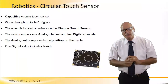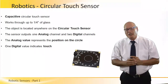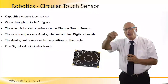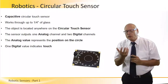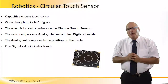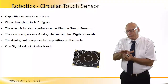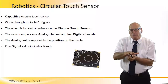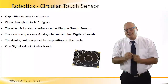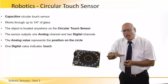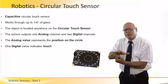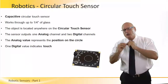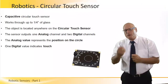A circular touch sensor is a capacitive type of circular sensor and it can work through glass. The object can be located anywhere on the circular touch sensor. For example, if we need to clean or shine something, we want to know at any given moment exactly where we are on the object. The circular touch sensor tells us exactly where the object is touching our cleaning tool as we work. The advantage is the ability to analyze values even through glass.